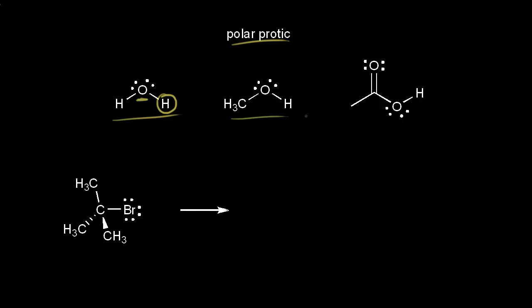Next, we have methanol, which again has a hydrogen directly connected to an electronegative atom, an oxygen. And finally, acetic acid, which has the same thing — here's our hydrogen and here is our oxygen. So these polar protic solvents favor an SN1 mechanism. An SN1 mechanism is favored by a polar protic solvent.